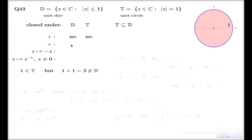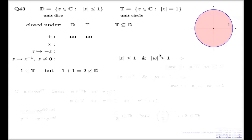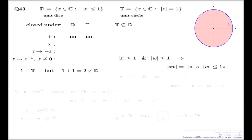What about multiplication? It is actually yes for both. You can argue it like this: if you take a Z with absolute value less than or equal to one, and a W with absolute value less than or equal to one, then the principal ingredient is this identity for the absolute values — the absolute value of the product of two complex numbers equals the product of the individual absolute values. Each of them less than or equal to one, so the product will still be less than or equal to one. That's what makes the answer yes.